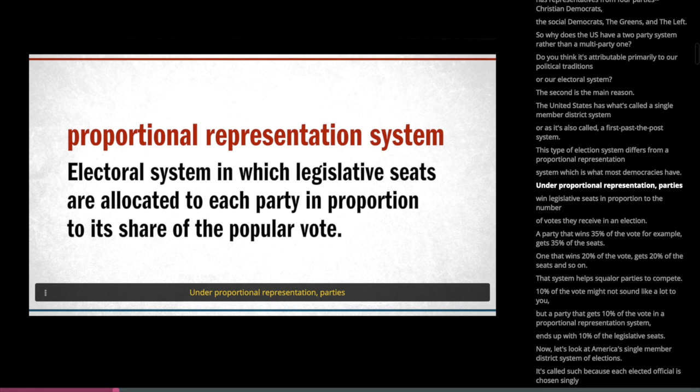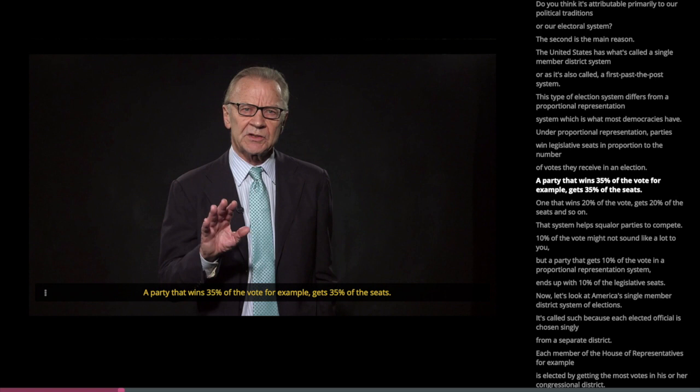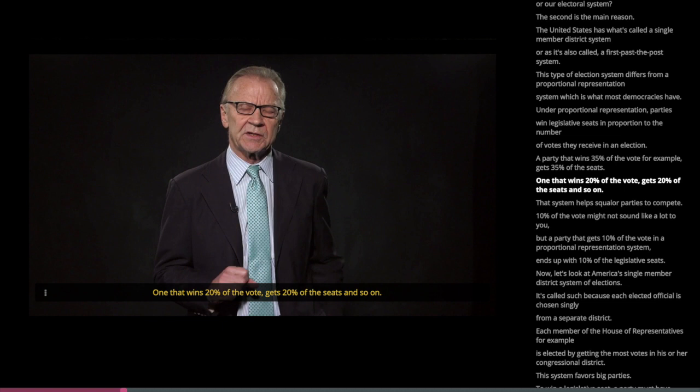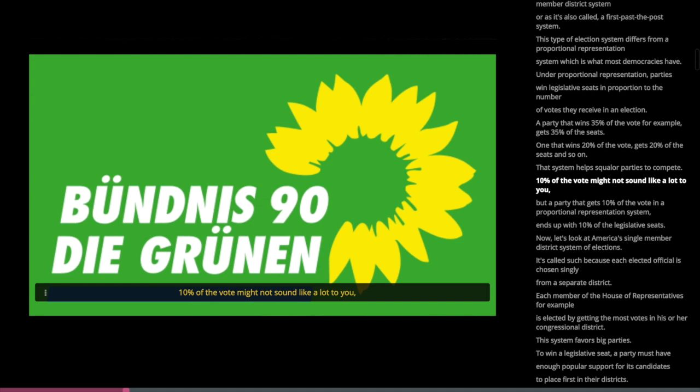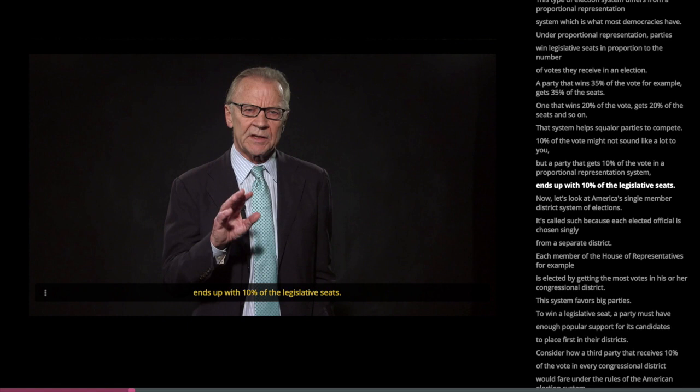A party that wins 35% of the vote gets 35% of the seats. One that wins 20% of the vote gets 20% of the seats. That system helps smaller parties to compete. A party that gets 10% of the vote in a proportional representation system ends up with 10% of the legislative seats.